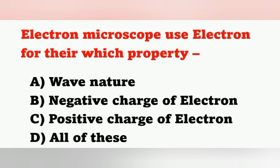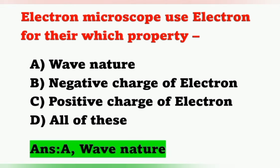The next question: electron microscopes use electrons for which property? Options: Option A, wave nature; Option B, negative charge of electron; Option C, positive charge of electron; Option D, all of these. In an electron microscope, electrons are used for their wave nature. Option A is the correct answer.